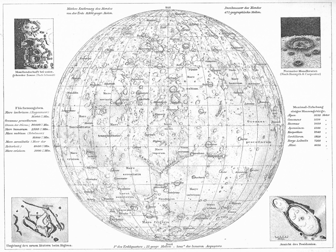Features on Janus are named after people from the myth of Castor and Pollux. Features on Epimetheus are also named after people from the myth of Castor and Pollux. Features on Mimas are named after people and places from Malory's La Morte d'Arthur legends.